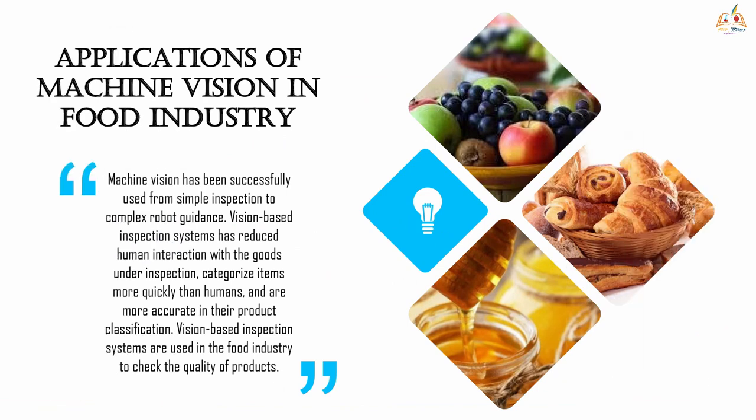Let's enter into the final part — application of machine vision in the food industry. This has been successfully used from simple inspection to complex robot guidance. Vision-based inspection systems have reduced human interaction with foods under inspection, categorize items more quickly than humans, and are more accurate in product classification. They are used in the food industry to check the quality of products.